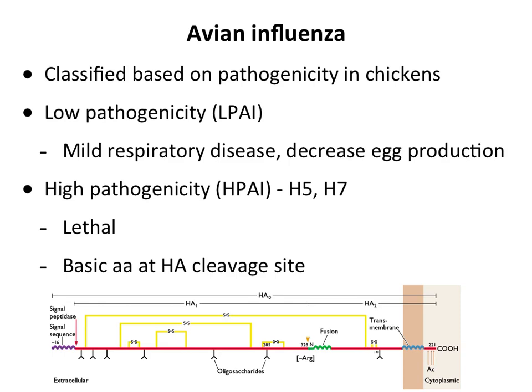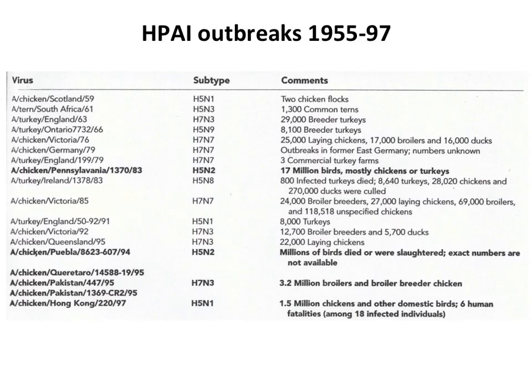The protease that cleaves is restricted to the respiratory tract for human strains. The high pathogenicity avian strains have a series of basic amino acids at the cleavage site, meaning they can be cleaved by proteases found in all tissues — called ubiquitous proteases. So these viruses in principle could replicate in many different tissues, since protease cleavage is a major determinant of viral tropism.